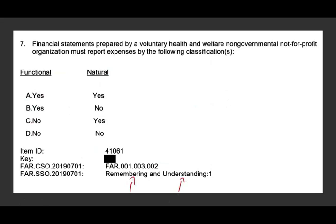Let's take a look at this question. Again, this question is remembering and understanding, so it should take you very quickly to answer. Financial statements prepared for voluntary health and welfare organizations must report expenses by which classification — functional, natural, or both? You should memorize this because this is remembering. It covers both functional and natural. So the answer is A.